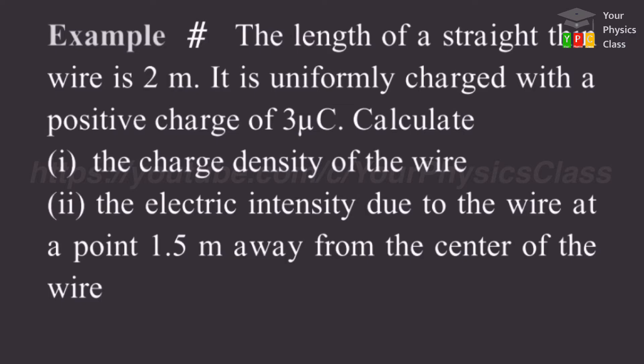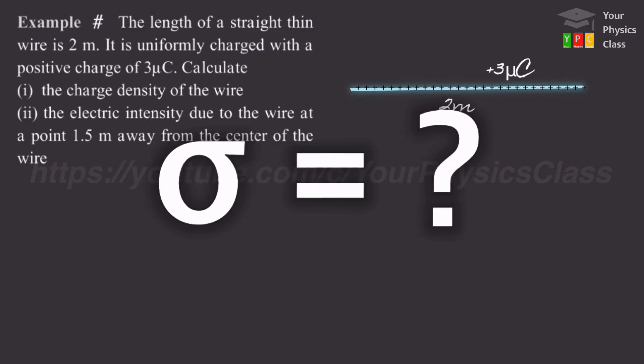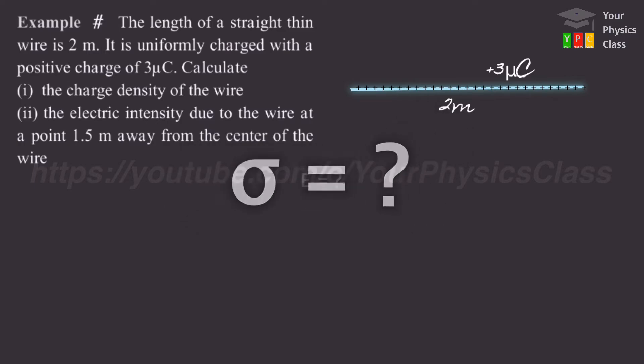Example: The length of the straight thin wire is 2 meter and it is uniformly charged with a positive charge of 3 micro coulomb. Calculate the charge density of wire and electric intensity due to wire at a point 1.5 meter away from the center of the wire.